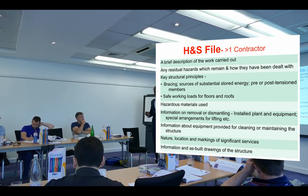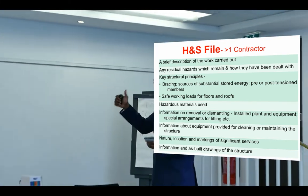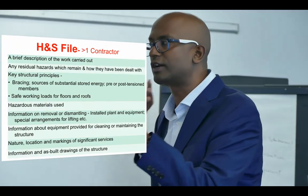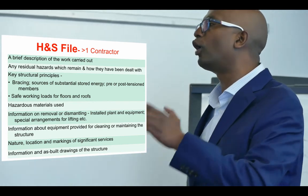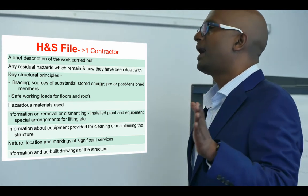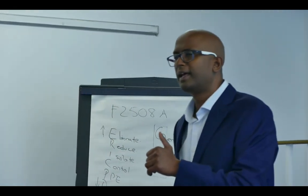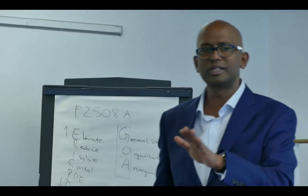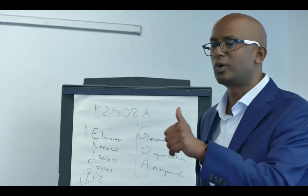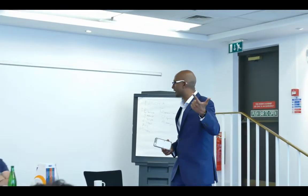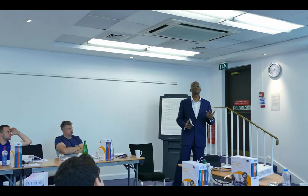The health and safety file is required where there are more than one contractor. Once again: pre-construction information and the construction phase plan are required for all projects. Health and safety file is required where there is more than one contractor. So 'more than one contractor' comes into the scene a few times: if more than one contractor, you must have a principal designer and a principal contractor — and one of the documents must be the health and safety file.